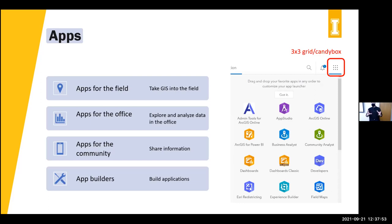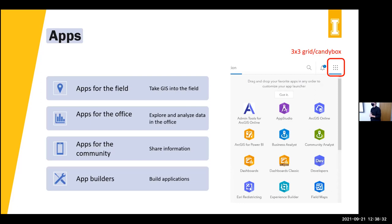ESRI tends to break apps down into four categories: apps for mobile data collection, where you can work in an internet environment or offline in the field; apps for the office, which are best used at your desktop — heavier apps like ArcGIS Pro; apps for the community to share information, including ways to share data and applications with the broader community; and app builders, for making maps and encasing them inside an application, for both non-programmers and programmers.